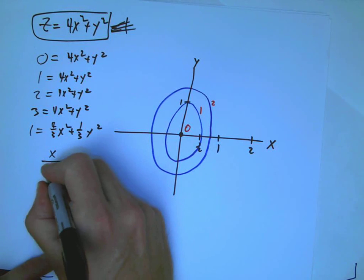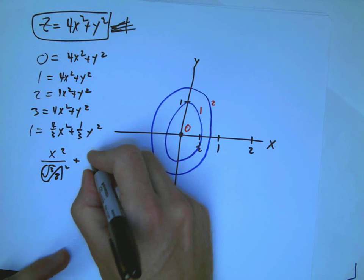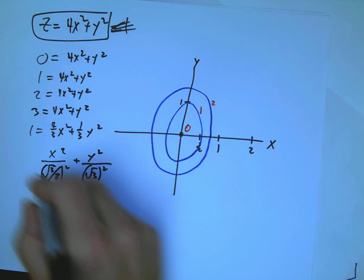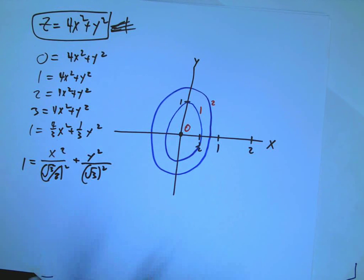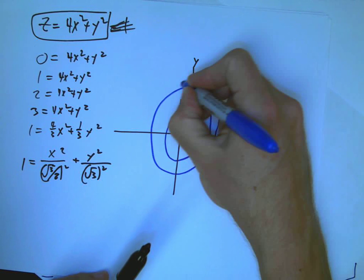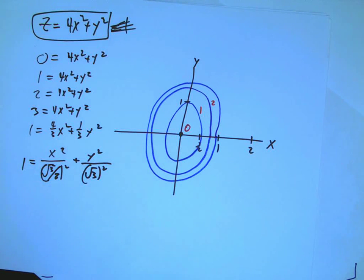What's our key numbers now? So now it's root 3 over 2 squared and root 3 squared. So root 3 over 2 is in here. And what we notice is these guys are getting closer together, and that indicates steepness.